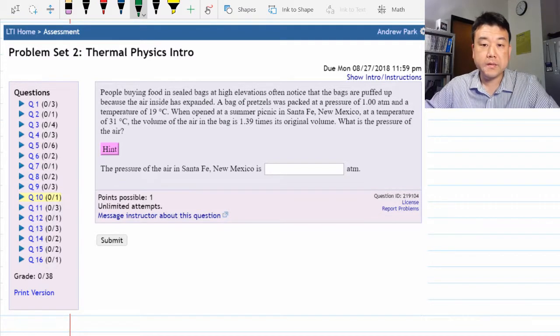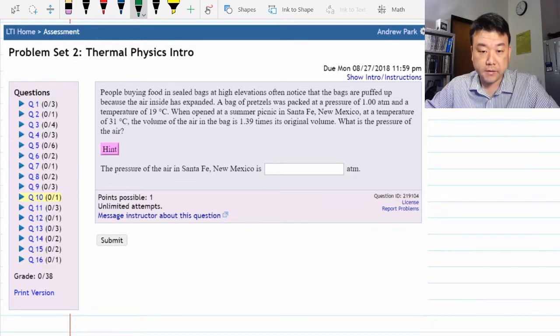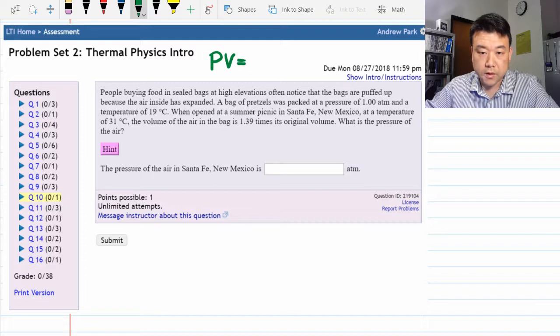Hi, this is the first video in application of ideal gas law. Ideal gas law PV is equal to nKT is very important to thermodynamics.